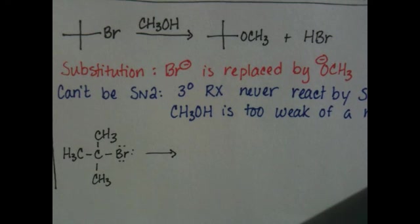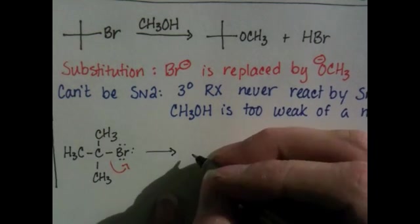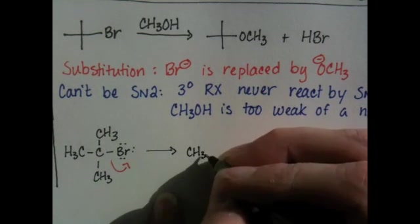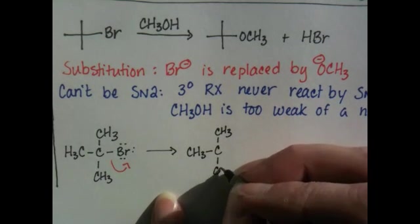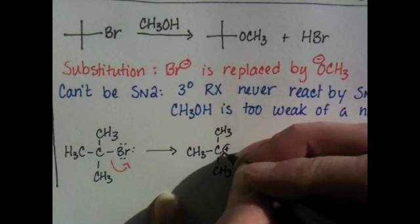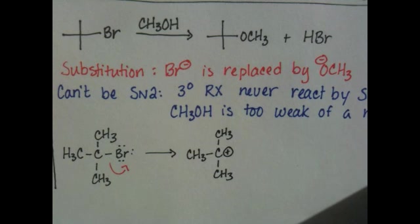So, this mechanism actually is initiated by loss of the leaving group. That's the first thing that happens. The leaving group comes off the molecule, and that creates a carbocation. And this carbocation is pretty stable because it's tertiary.